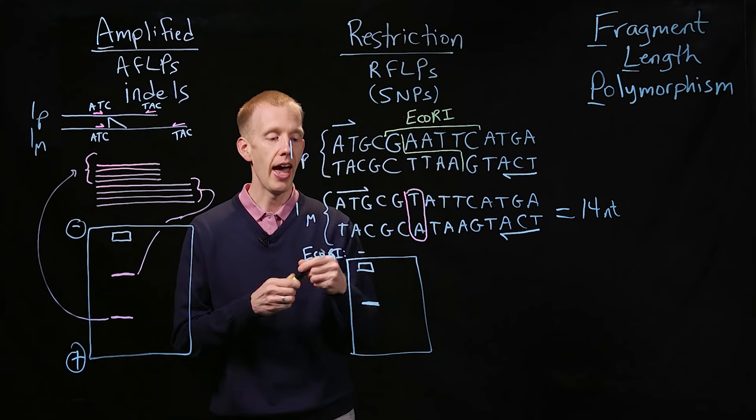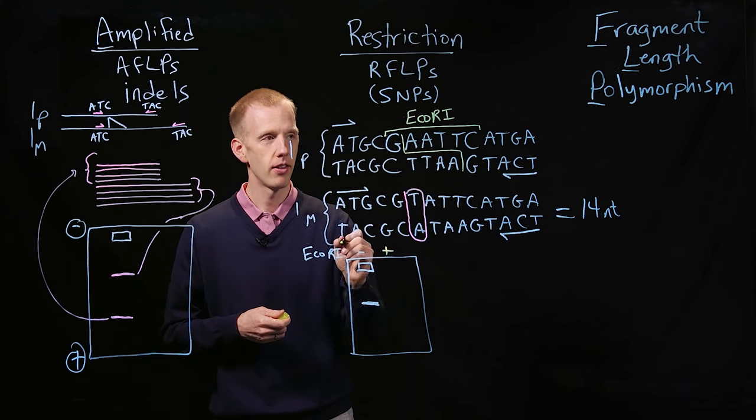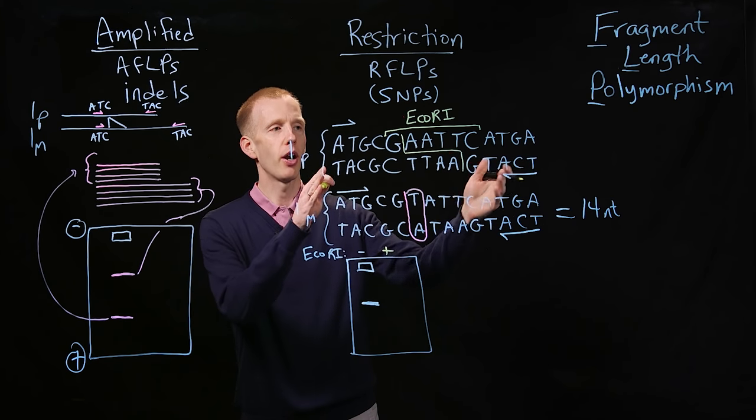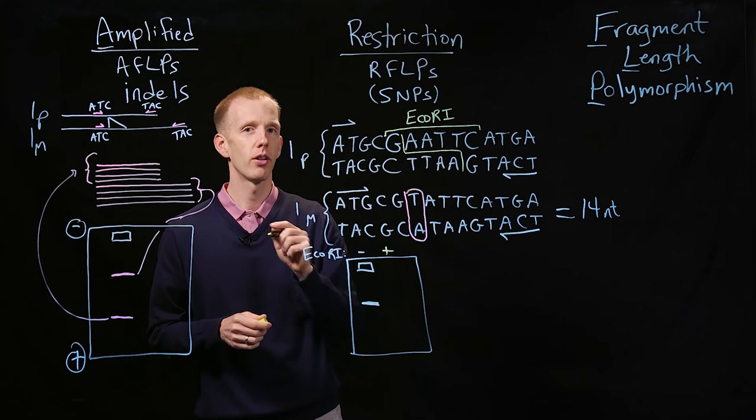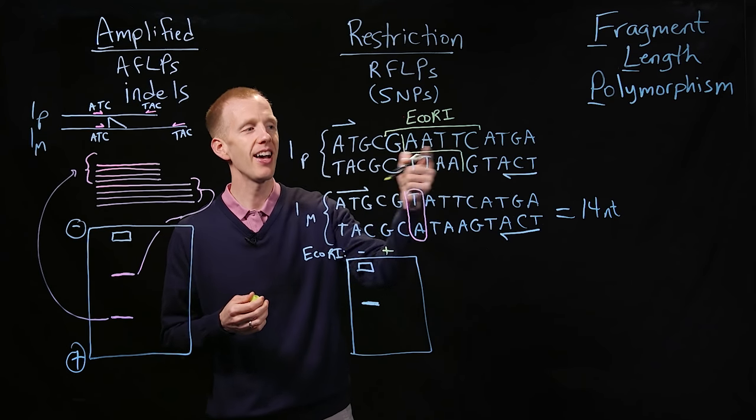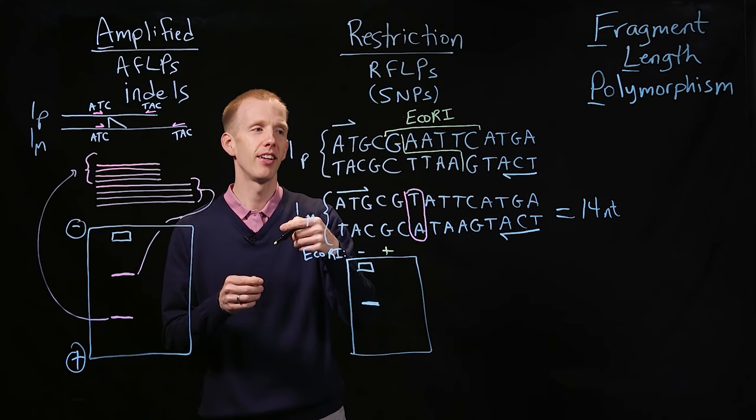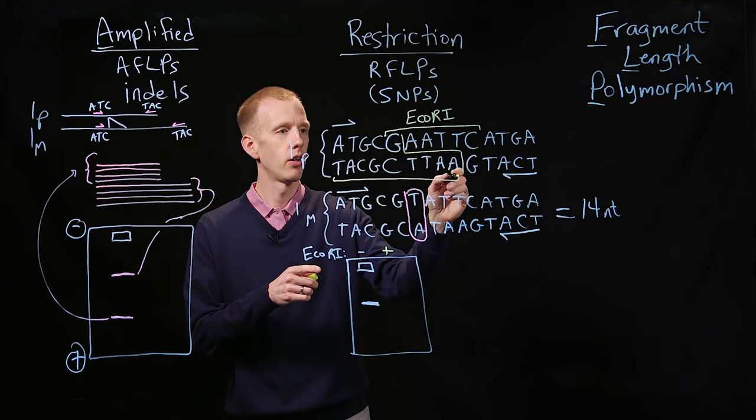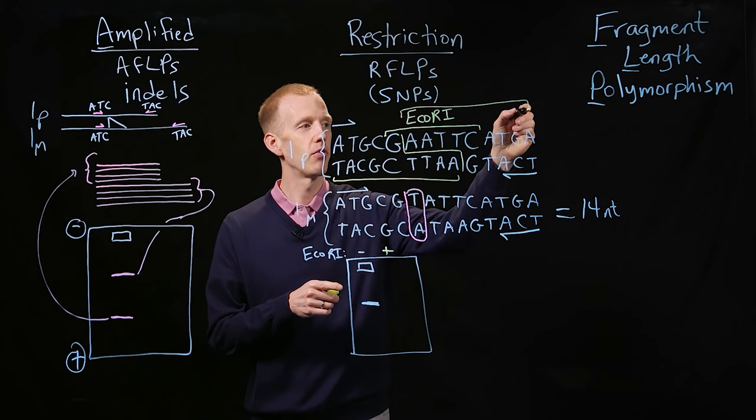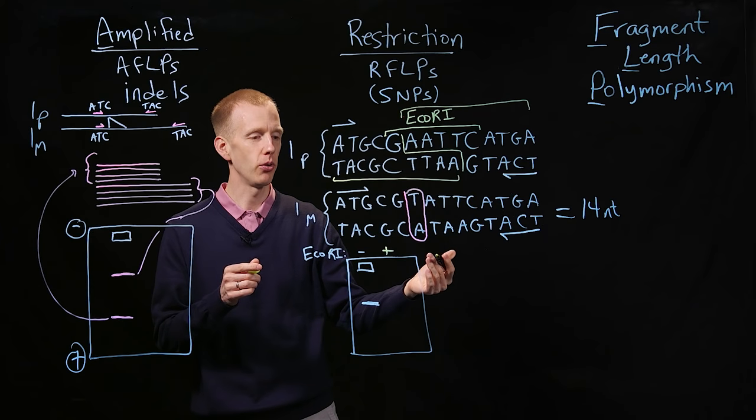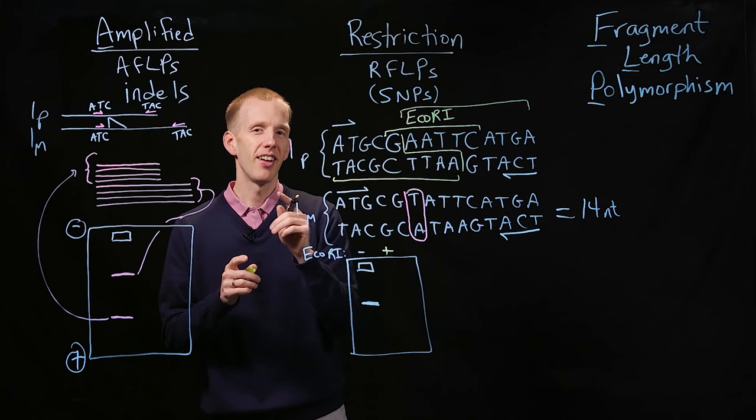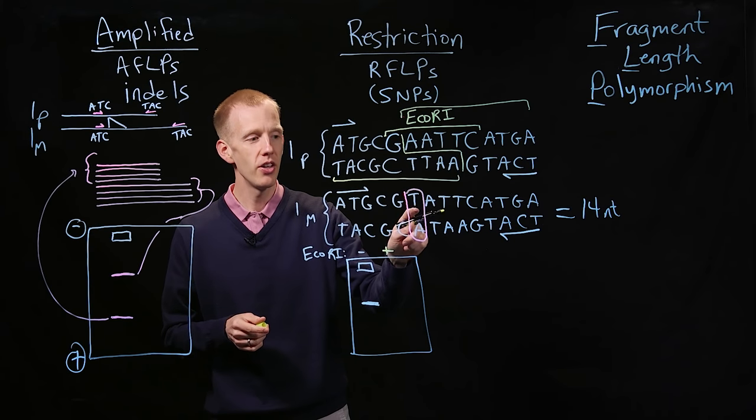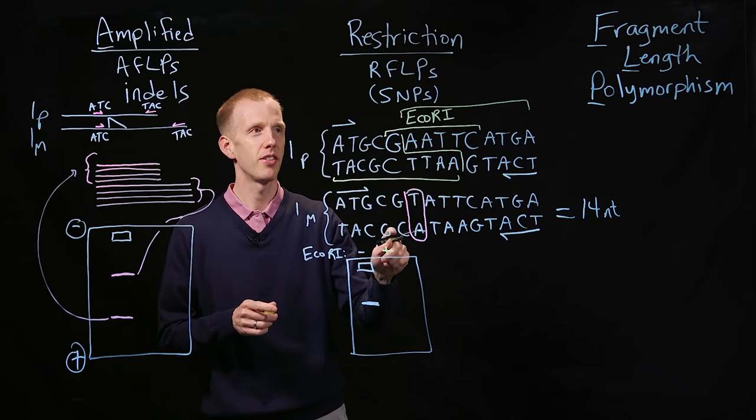So what do we have to do? We have to have a sample where we've added the restriction enzyme. Now what happens is, every time there's a PCR product that contains the paternal allele, the paternal haplotype that has the EcoR1 site, it's going to get cut. And that's going to produce two DNA molecules that are about half of the length as the full-length 14 nucleotide molecule. But, is EcoR1 able to cut mom's chromosome? No, because of this polymorphism, this SNP.